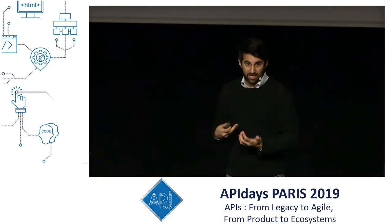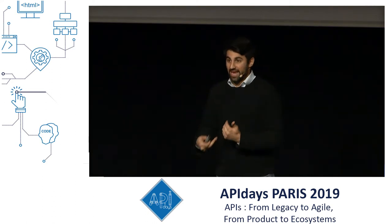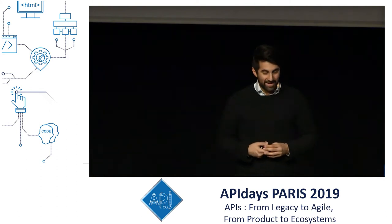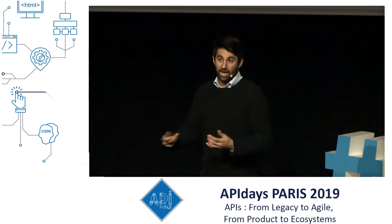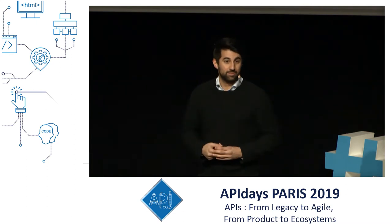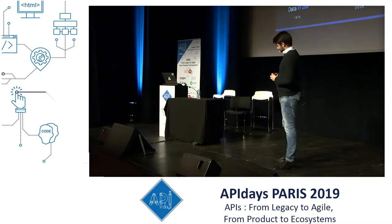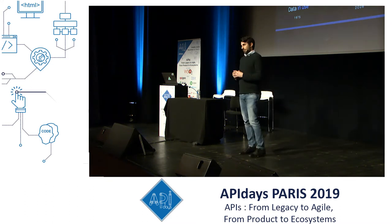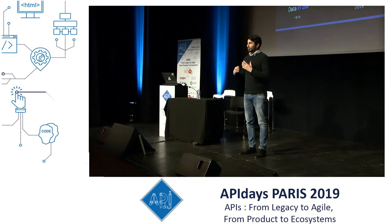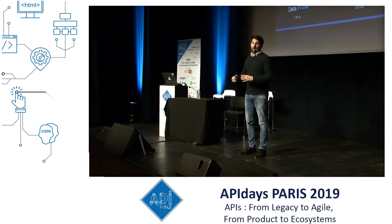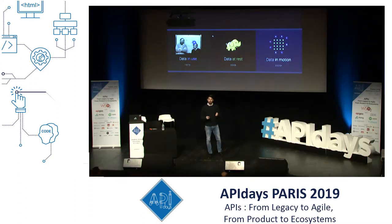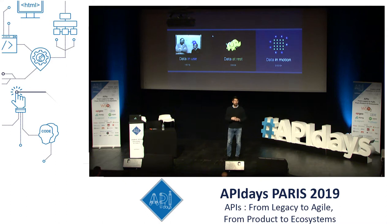As a result, the data that our systems are processing has entered a new state. As we all know, data can be in use by our monolith, by our applications, by our MapReduce queries, and data can also be at rest in databases and data warehouses. The more distributed our applications become, the more decentralized, the more highly available, the more decoupled they become, and more and more data enters a new state — it becomes in motion, from one place to another, from one service to another, from one data center or one cloud to another.